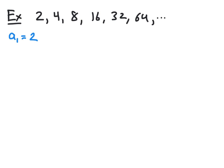We see a sub 1 will be the first term, which is 2. A sub 2 will be the second term, which is 4. A sub 3 will be the third term, which is 8. A sub 4 will be the fourth term, which is 16. A sub 5 will be the fifth term, which is 32. And A sub 6 will be the sixth term, which is 64.